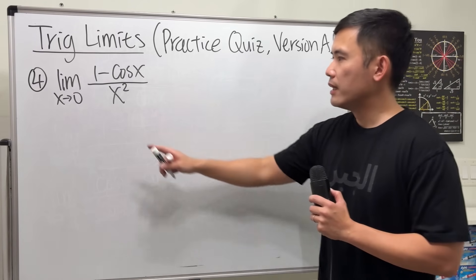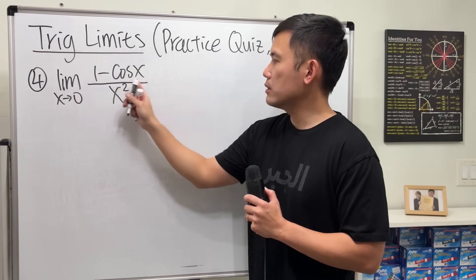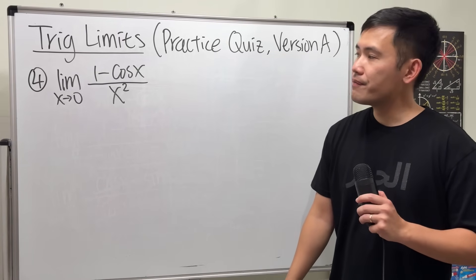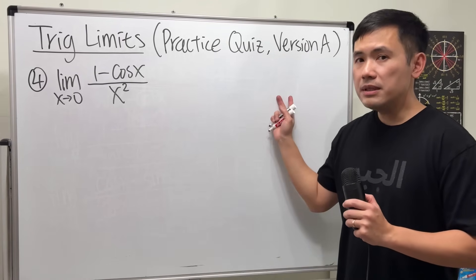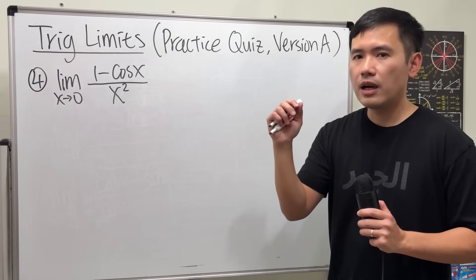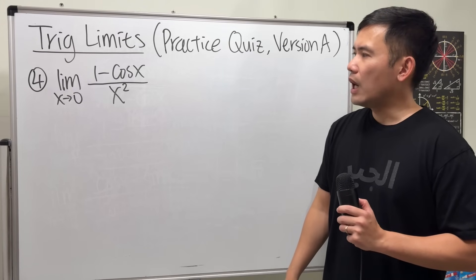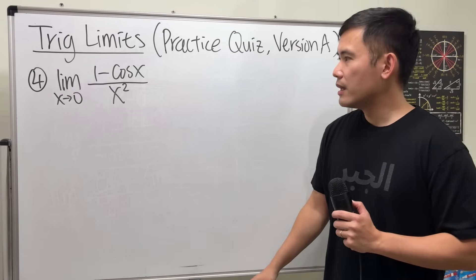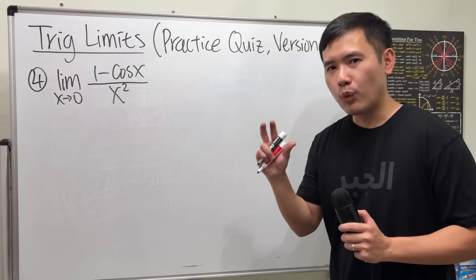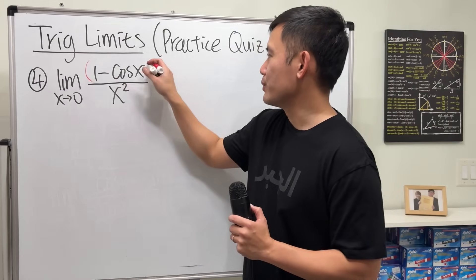Now for number 4: the limit as x going to 0 of (1 minus cosine x) over x squared. We're going to use the fundamental limit of sine theta over theta equals 1. To produce sine, notice we have 1 minus cosine — multiply by (1 plus cosine x) to get 1 minus cosine squared, which is nice.